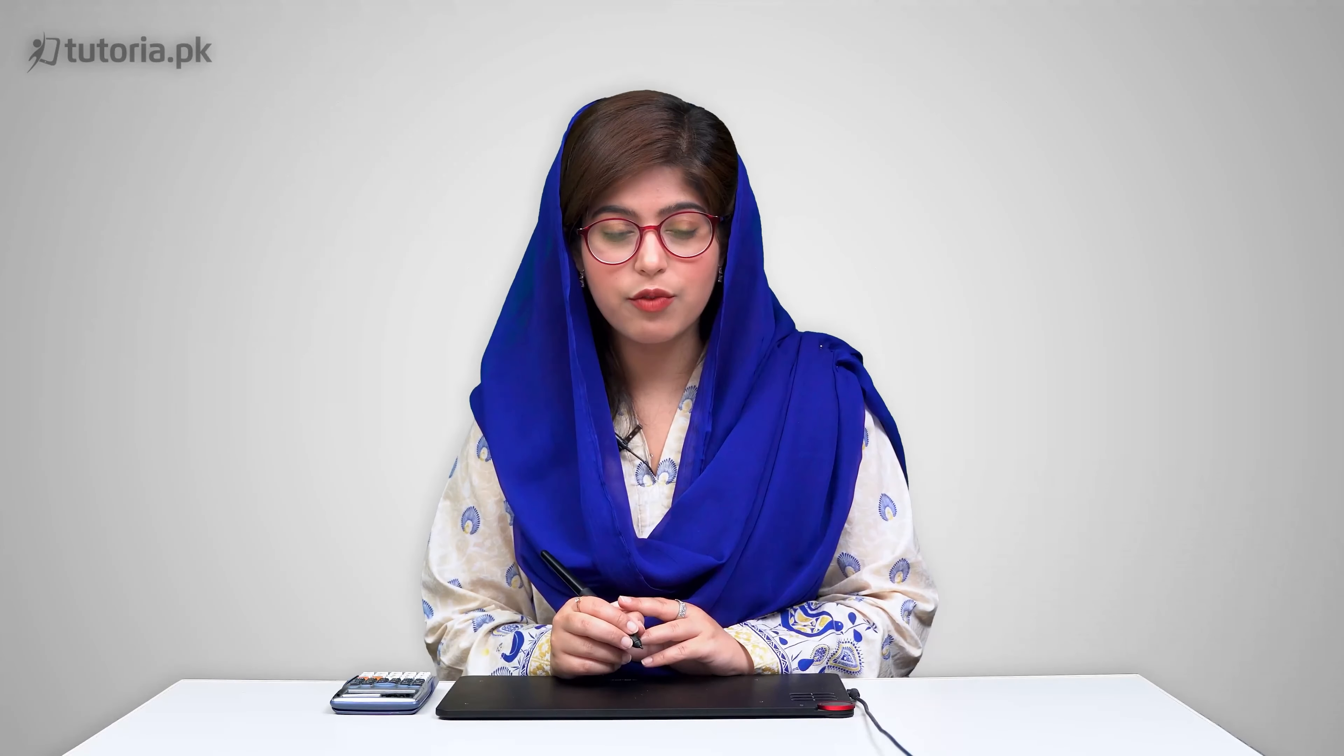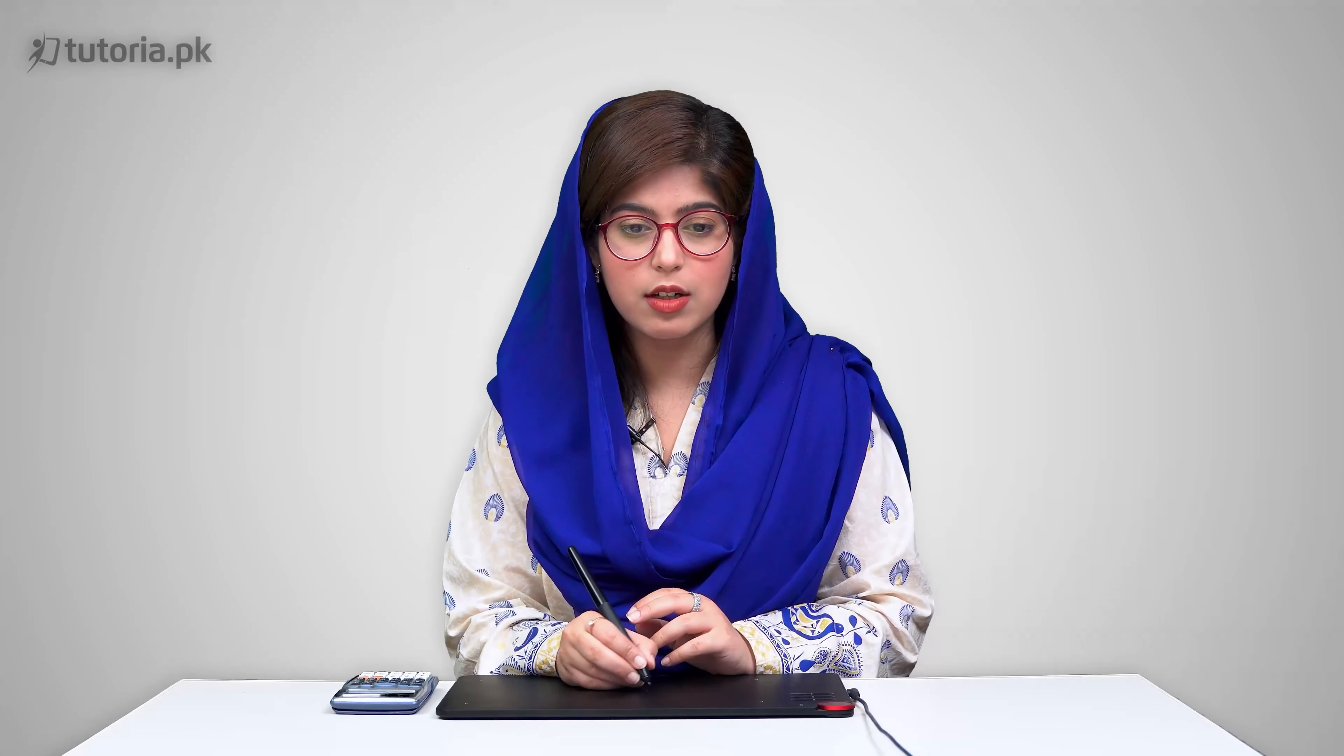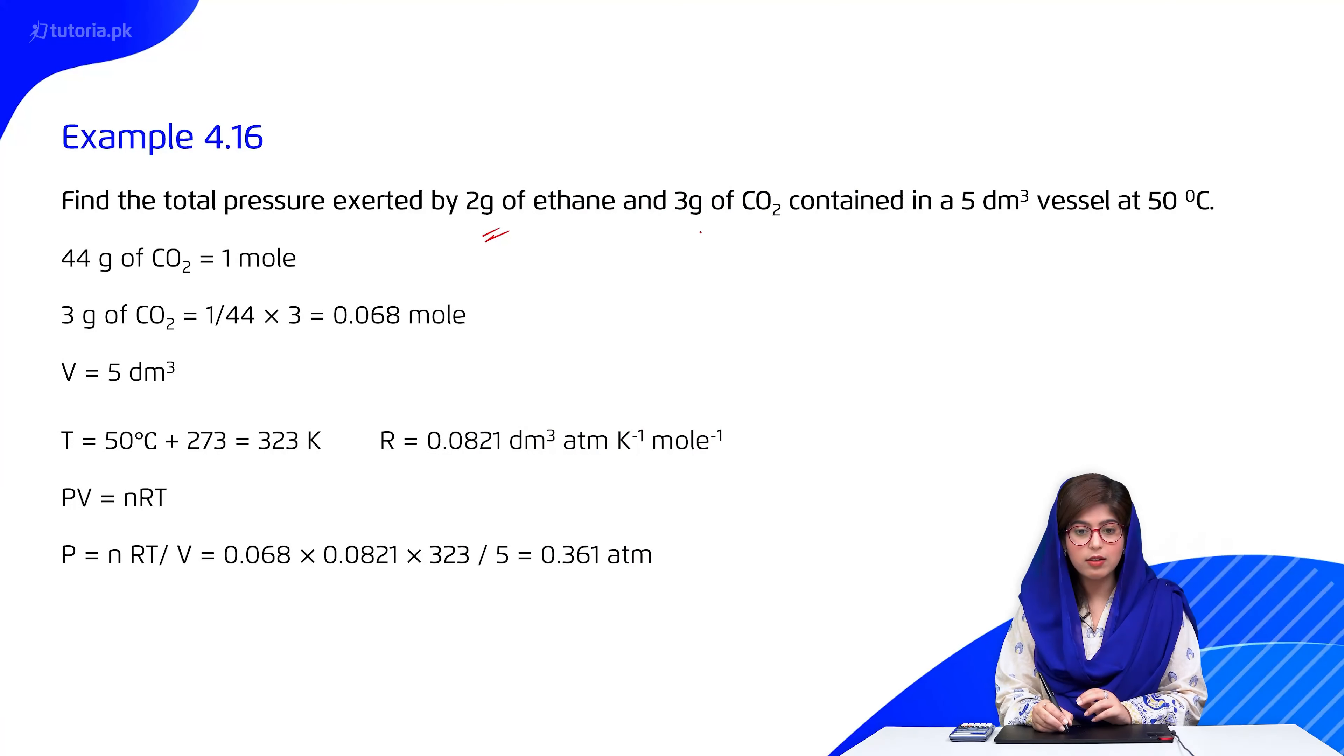Next students, Example 4.16. Find the total pressure exerted by 2 grams of ethane and 3 grams of carbon dioxide contained in a 5 decimeter cube vessel at 50 degrees Celsius. We apply the general gas equation separately to calculate the pressure. First, we calculate the number of moles.